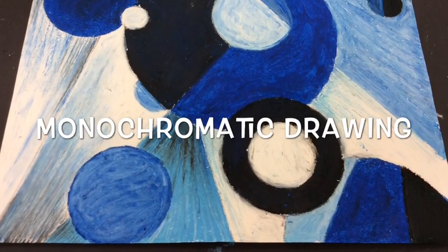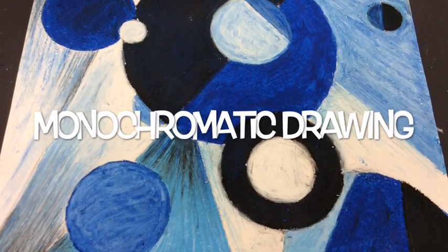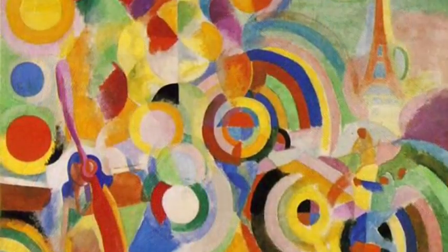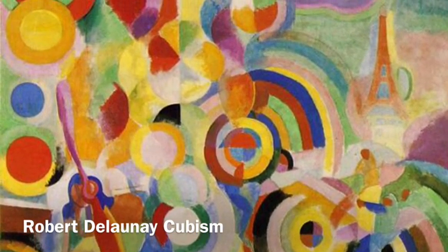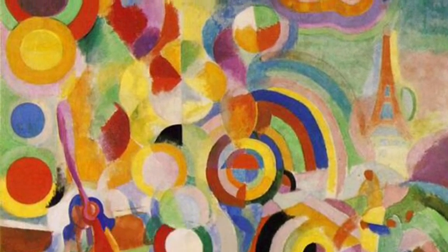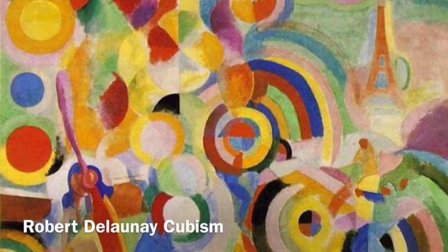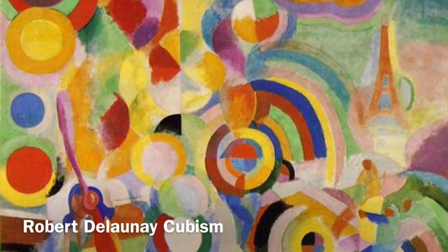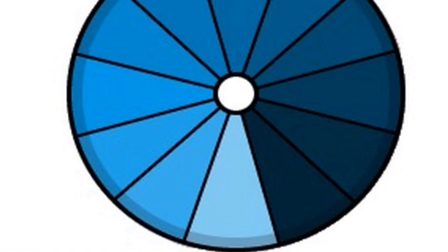For the exploration in Valley, you'll be creating a monochromatic drawing in oil pastels. First of all, we're going to look at Robert Delaunay's Cubism. Cubism is basically taking shapes and objects that you break apart to create different types of depth and organize your area.